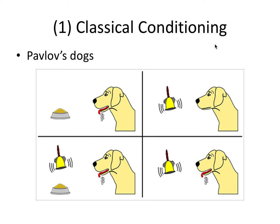Classical conditioning is all about stimuli, and was studied at length with Pavlov's dogs. We start with the unconditioned stimulus, or US — in this case, the food. Without any experimental influence, that food triggers an unconditioned reaction, or UR, which is the dog salivating. So outside of any experiment, US causes UR. Now we add in a neutral stimulus, or NS — in this case, ringing a bell — and there's no unconditioned reaction; the dog doesn't respond to the bell by itself.